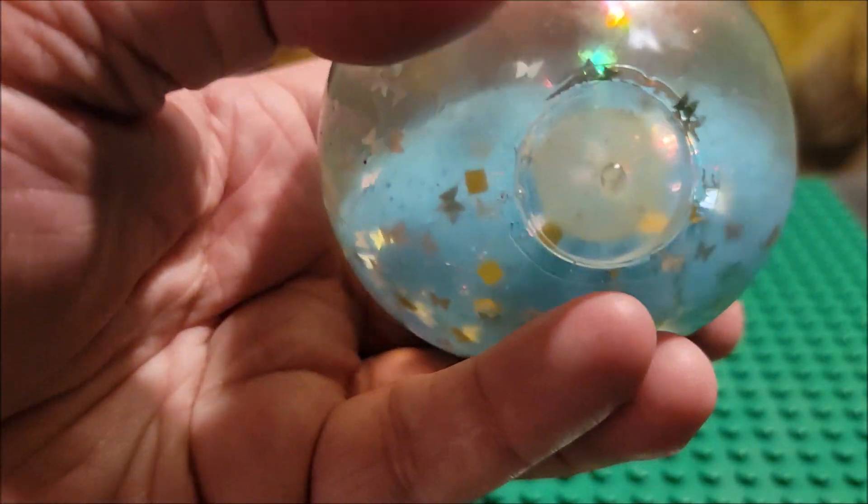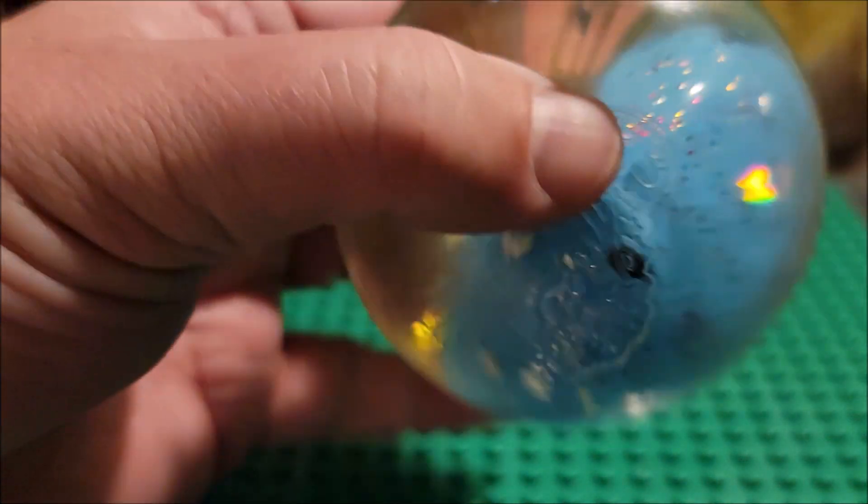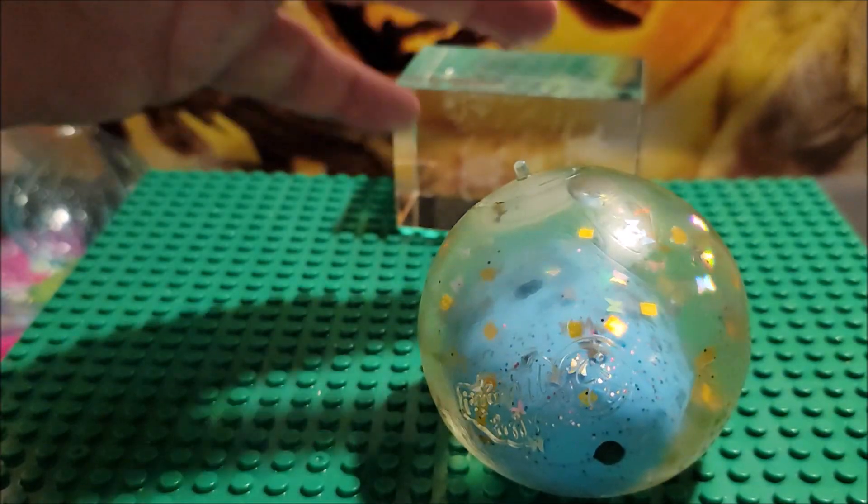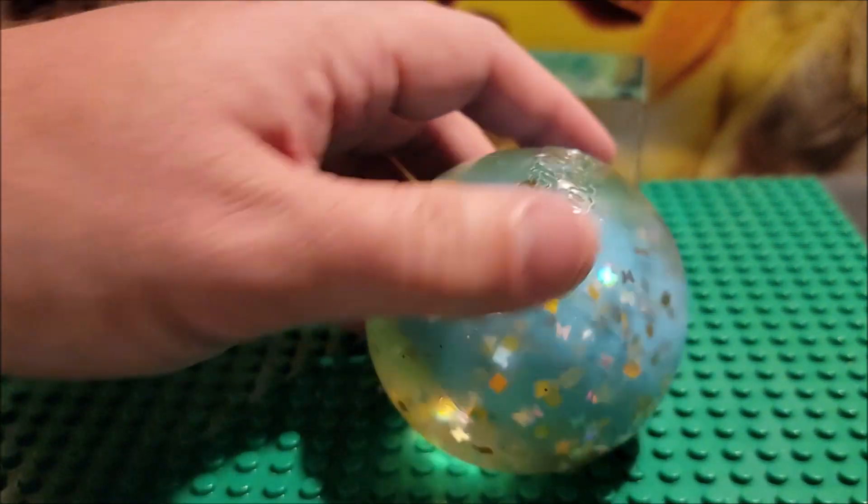So what we're going to do is we're going to get another container here where I can break this. And it looks like this is how it comes out. So it's going to be messy. So we're going to have a little container here. We're going to set it up, and then we're going to break it. Give me a moment.